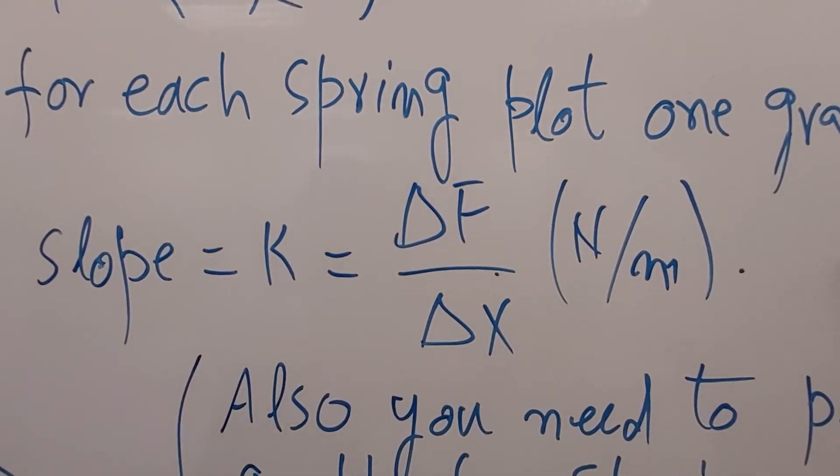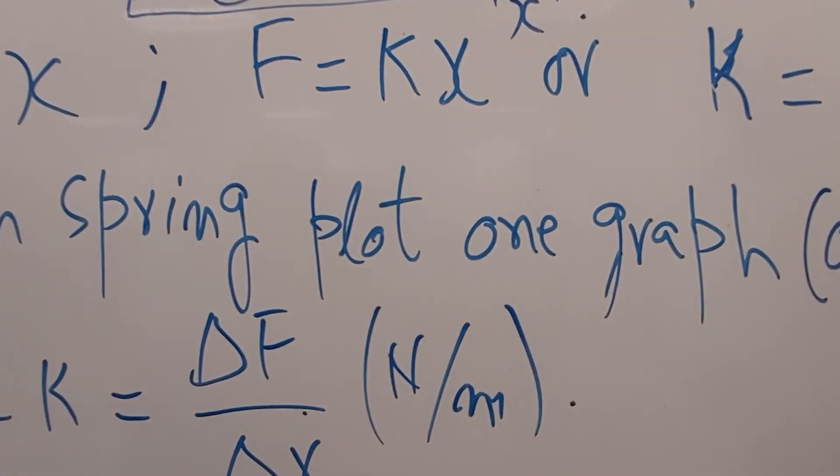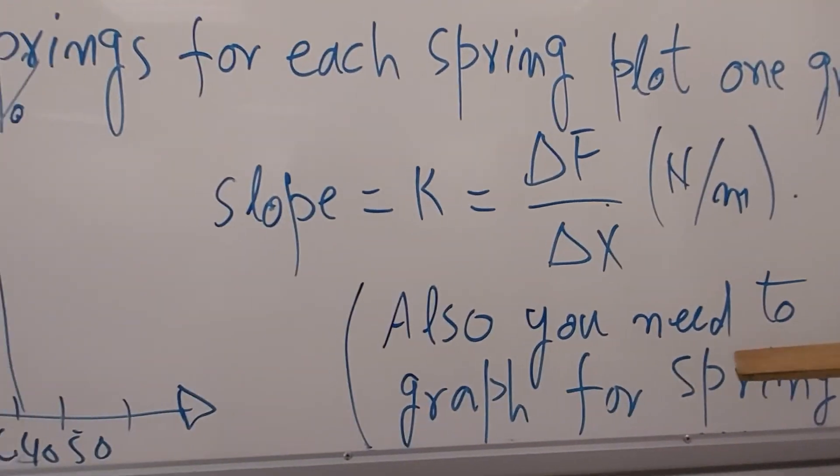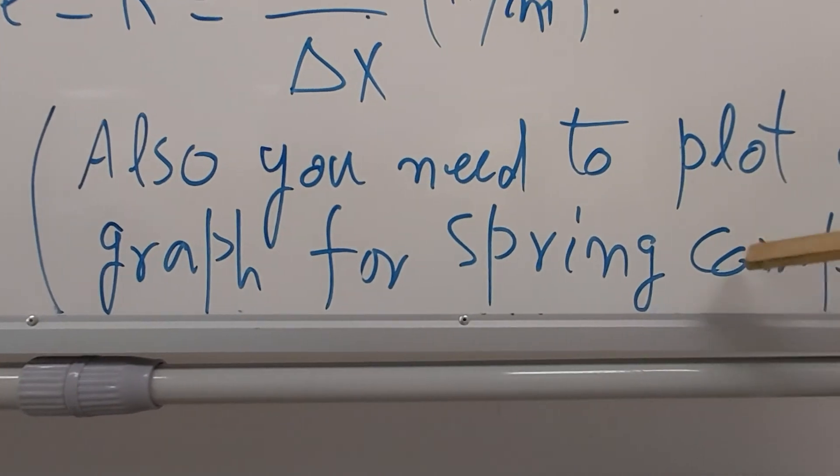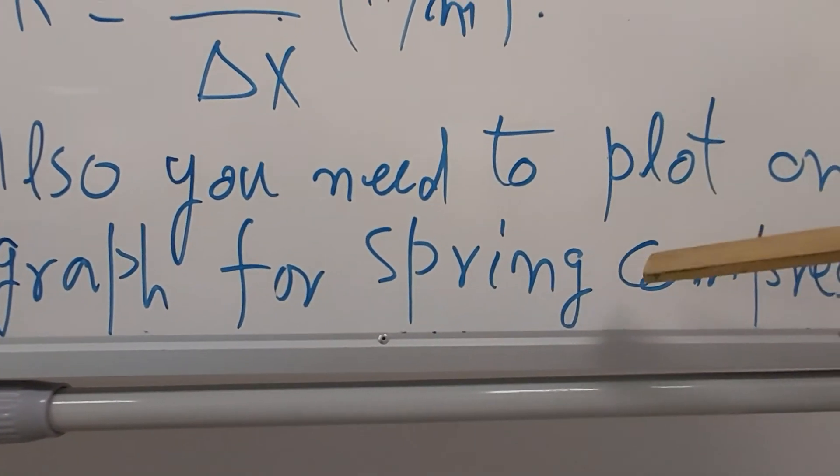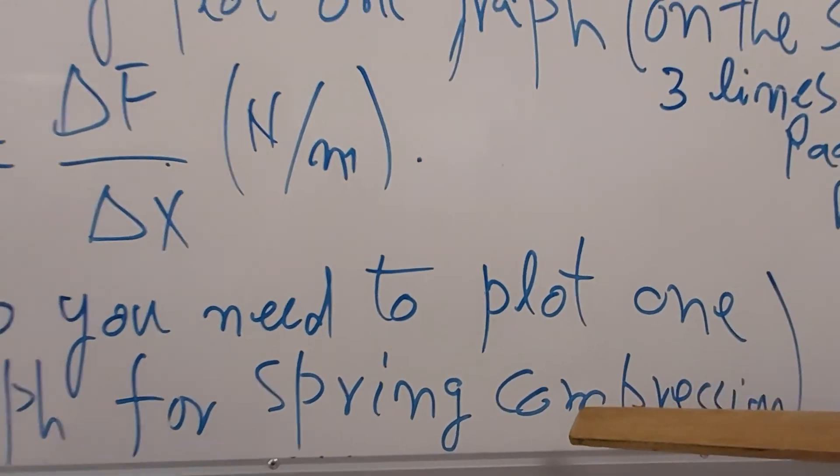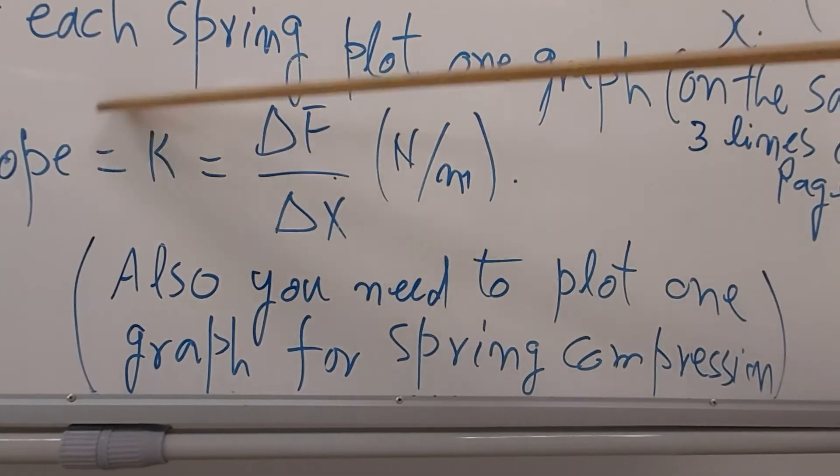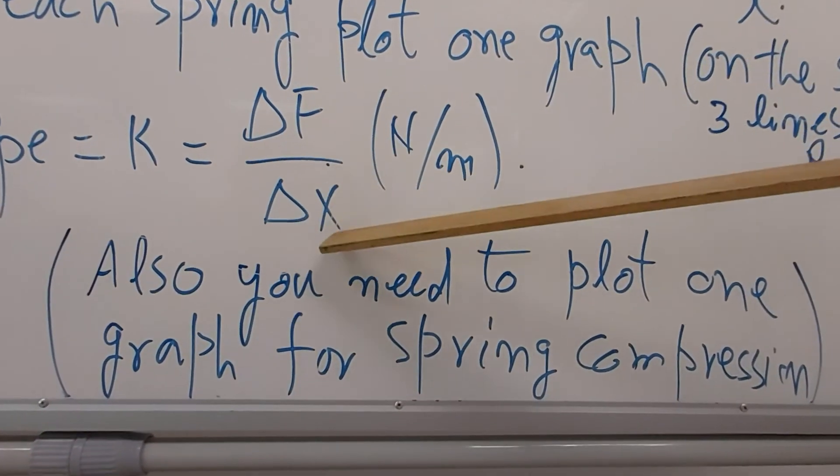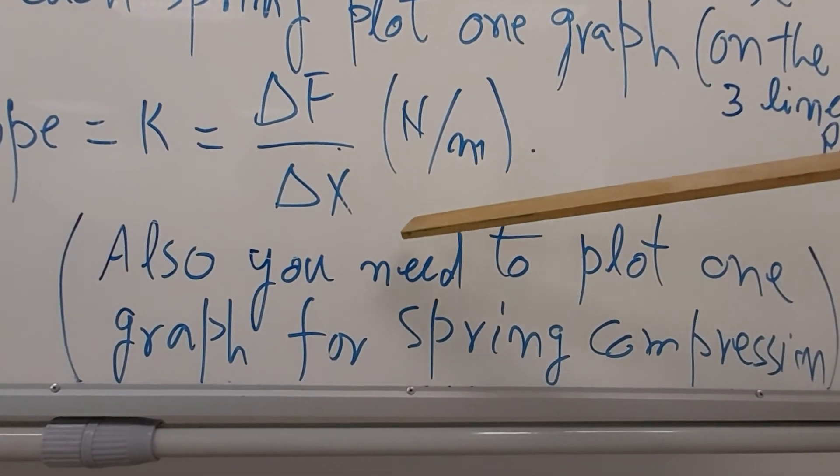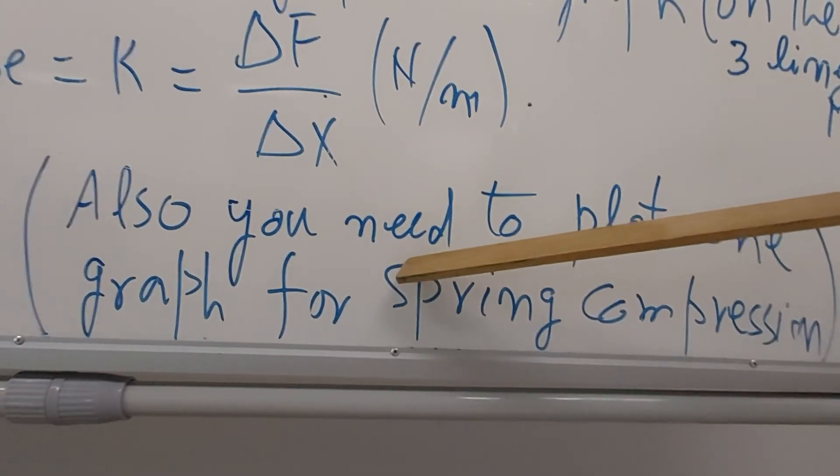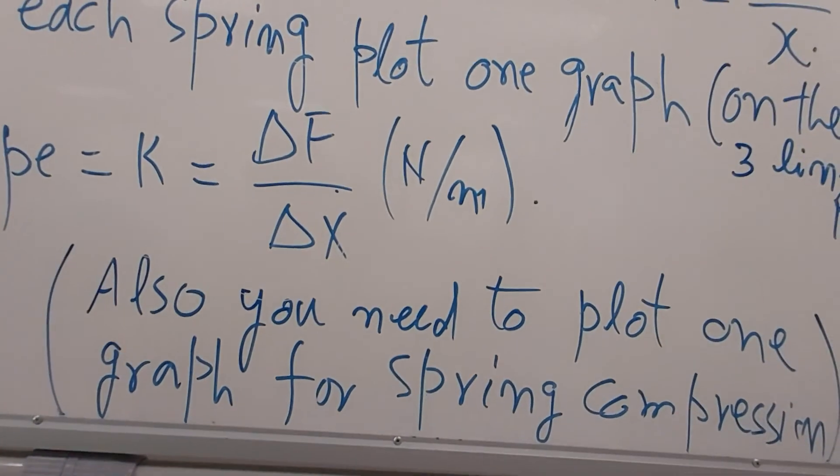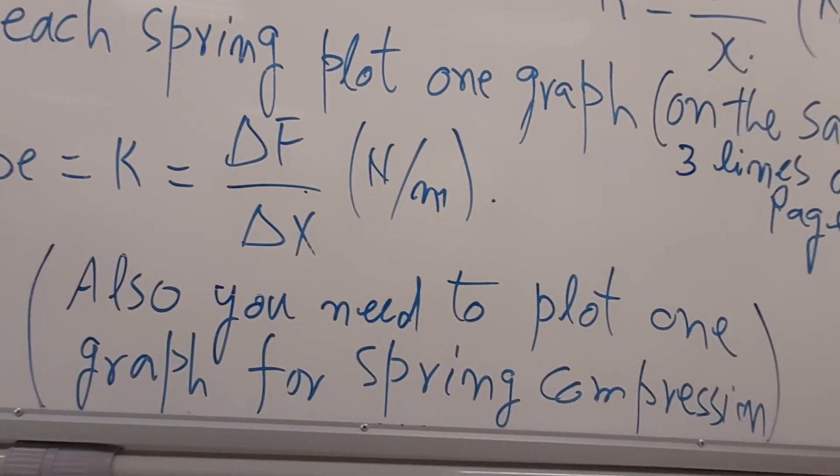Now you have another part in this experiment. You will compress a hard spring and find the spring constant the same way. How much is the compression? You will do this again - slope equals delta F over delta x. We will give you the data and you plot the graph. This graph you should plot on a separate graph paper than the previous one. I think this is over.